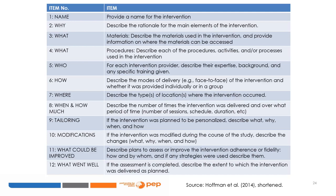7. Where? Describe the type of locations where the intervention occurred. 8. When and how much? Describe the number of times the intervention was delivered and over what period of time — for example, number of sessions, schedule, duration. 9. Tailoring — if the intervention was planned to be personalized, describe what, why, when, and how. 10. Modifications — if the intervention was modified during the course of the study, describe the changes: what, why, when, and how. 11. What could be improved? Describe plans to assess or improve the intervention adherence or fidelity, how and by whom. 12. What went well? If the assessment is completed, describe the extent to which the intervention was delivered as planned.